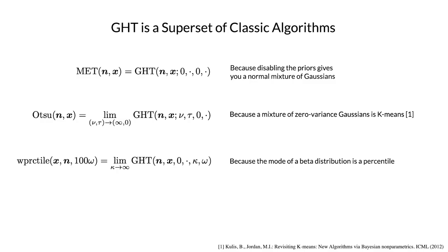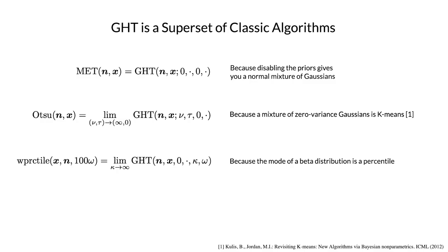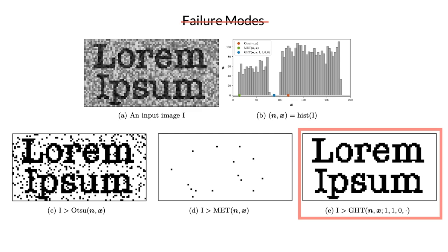And if you increase the strength of the beta distribution, you reproduce the percentile algorithm, just because the mode of a beta distribution is a percentile. And another thing I observed is that you can think of the prior on variance as being approximately equivalent to blurring or coarsening the histogram before doing any thresholding. This is a really neat observation because in practice, a lot of practitioners manipulate the behavior of automatic thresholding algorithms by modifying the bin width of their histograms. And this equivalent shows that you don't need to do that here, but also it might suggest that the reason people have historically used bin width as a tunable knob is because it gives them a sort of indirect control over an implicit conjugate prior on one of their model parameters.